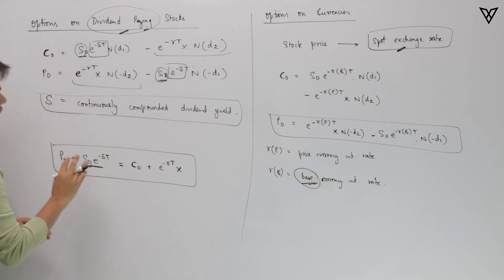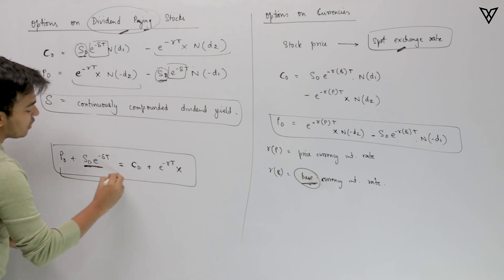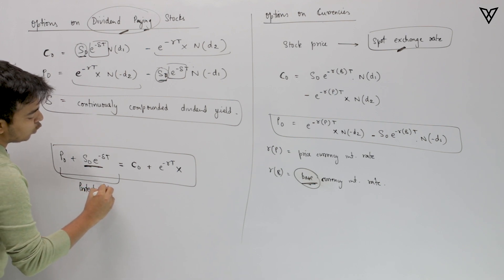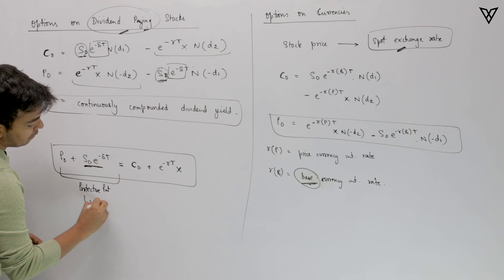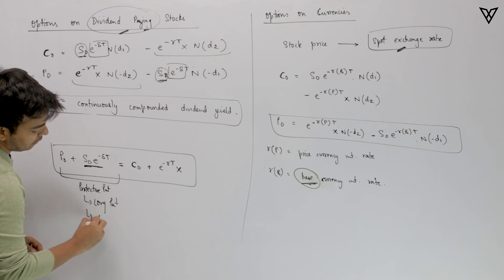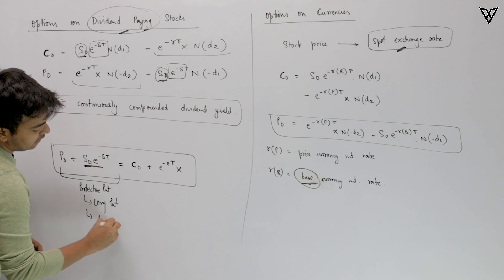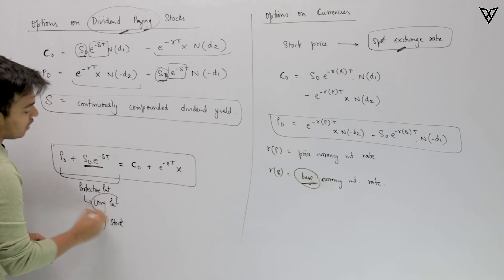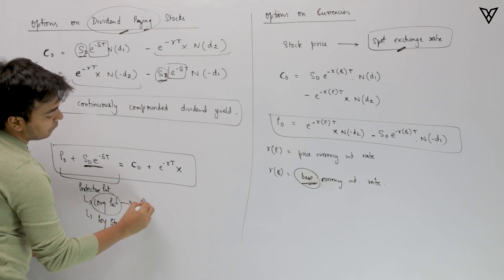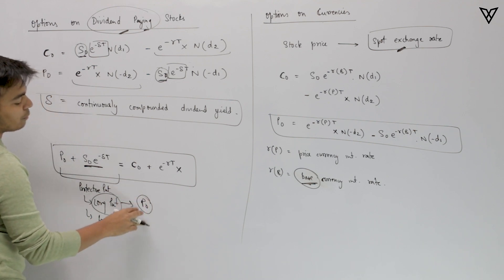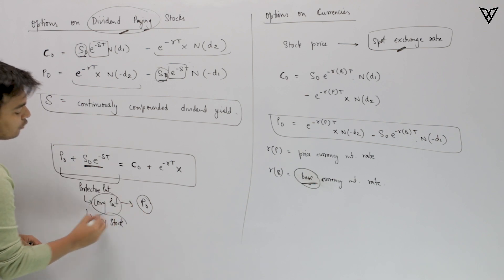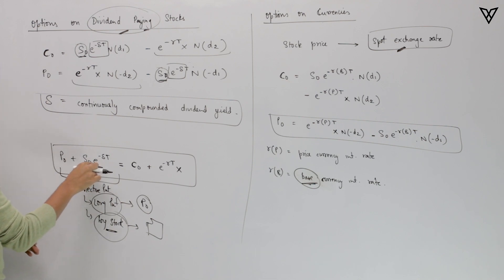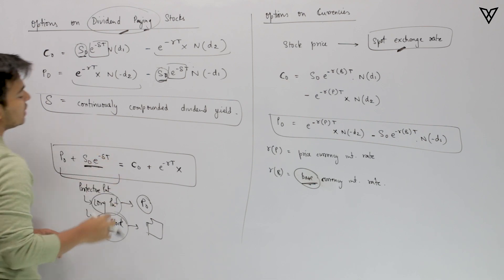It's quite simple. Let me recall the dividend yield adjustment for those who have forgotten. In a protective put, you go long put option and you go long stock. The values in the put-call parity equation: if you want to go long put, you pay a premium P0. And if you are buying the stock, the price you pay is S0 × e^(−dividend yield × T).